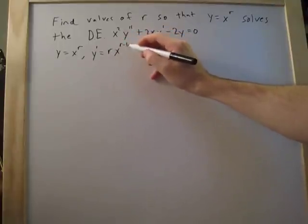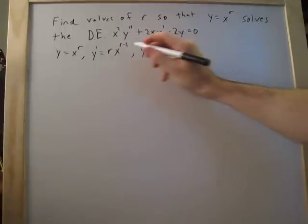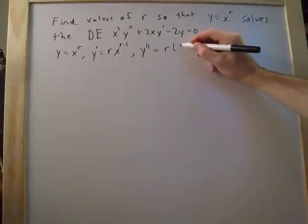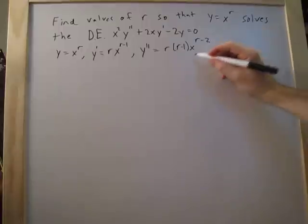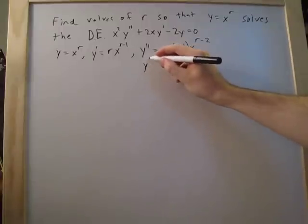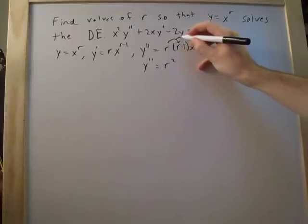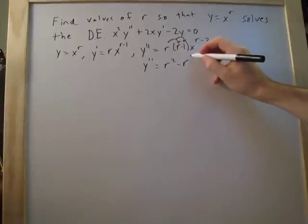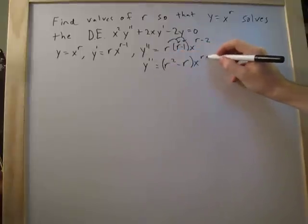And then y double prime, we'll do the same thing again, is going to equal r times r minus 1, x to the r minus 2. And then we can bring this in there, and this ends up being r squared. So bring that in to these two things, r squared minus r, and that's going to be times x to the r minus 2.